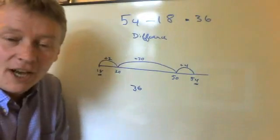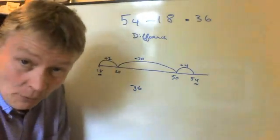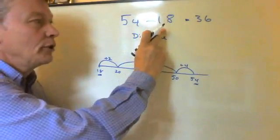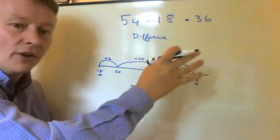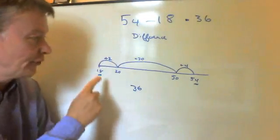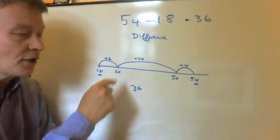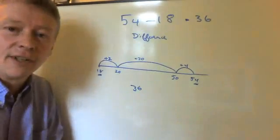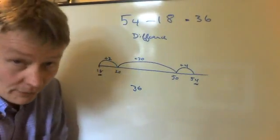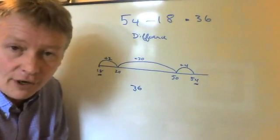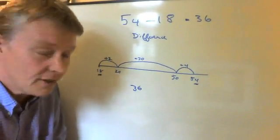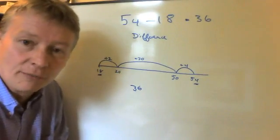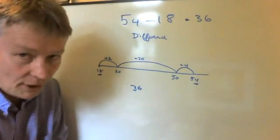That's using a number line — it works very well. And if you're more used to counting on, it can be made a little bit easier just by jumping up to the nearest whole 10 or something like that. If you look on the site, there are a couple of questions, and you'll be able to answer them using number lines.